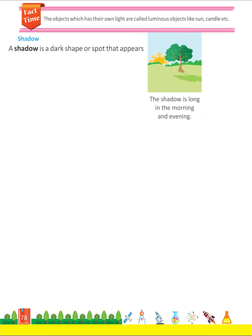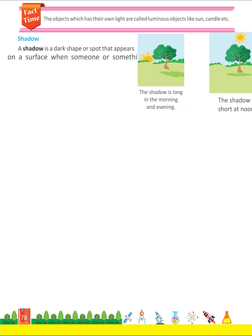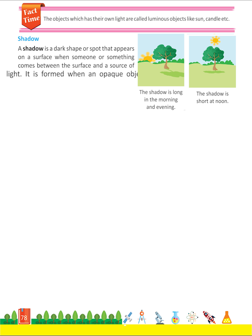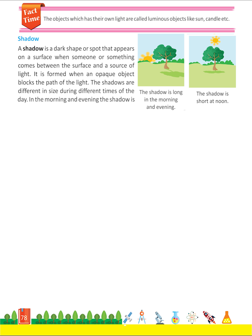A shadow is a dark shape or spot that appears on a surface when someone or something comes between the surface and a source of light. It is formed when an opaque object blocks the path of light. The shadows are different in size during different times of the day. In the morning and evening, the shadow is long, while at noon it becomes small.